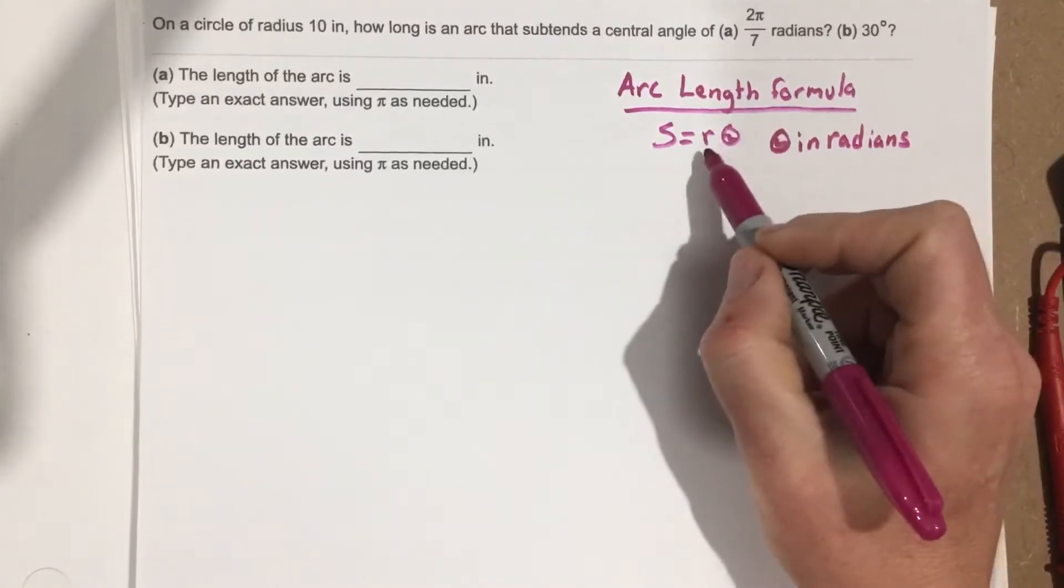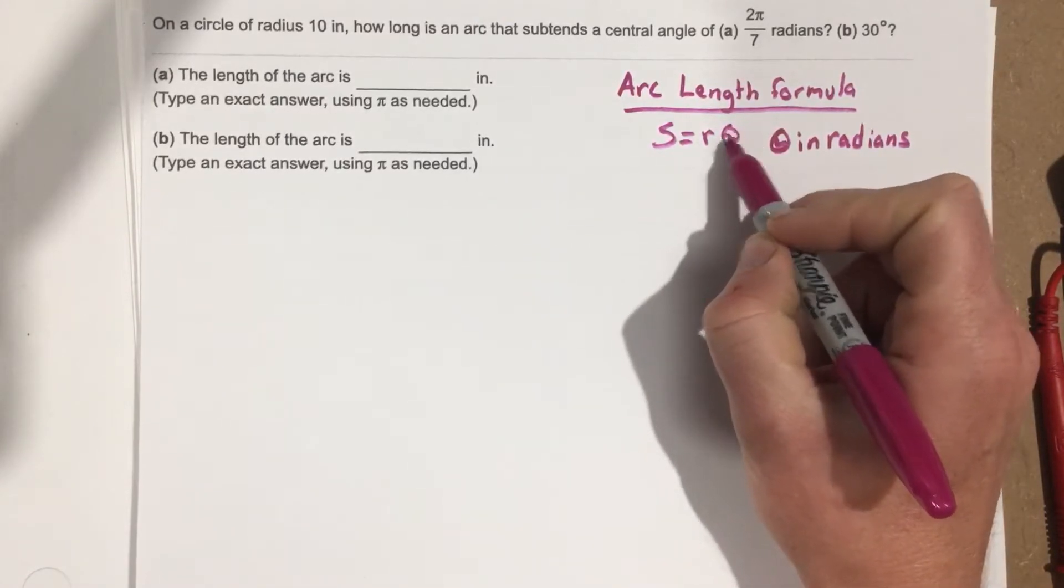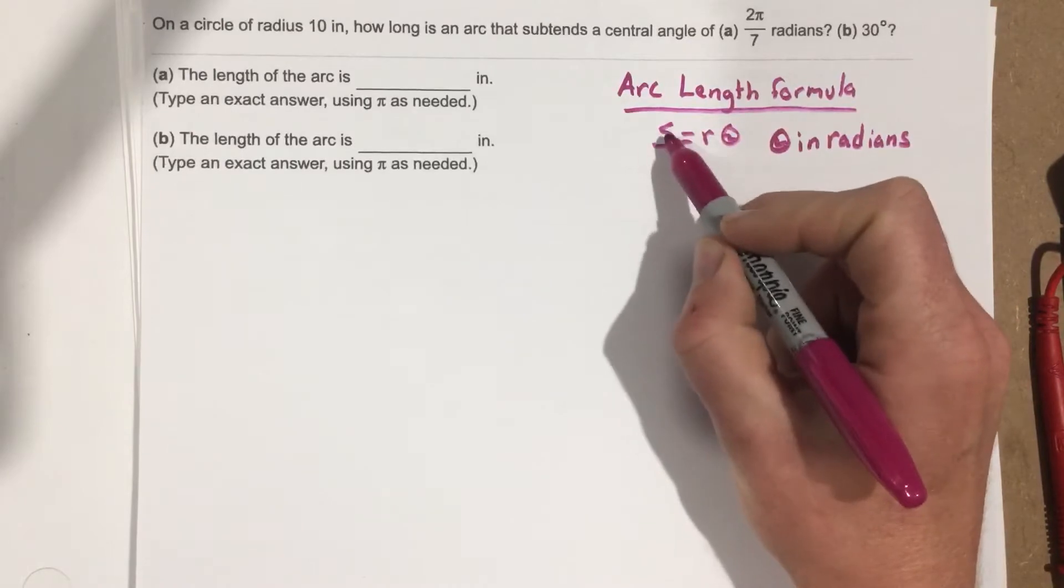S equals R theta. R stands for the radius. Theta stands for the degrees, or in our case, the radians, the angle. And S is the arc length.